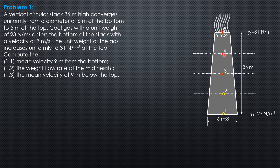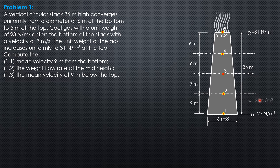Section 4 is 9 meters below the top. The specific weight goes from 23 to 31 newtons per cubic meter — that's a difference of 8 divided by 4, giving an increment of 2. So gamma 2 is 25, gamma 3 is 27, gamma 4 is 29, and gamma 5 is 31 newtons per cubic meter. That checks out correctly.